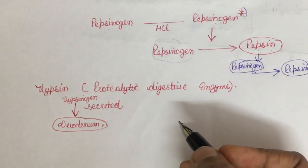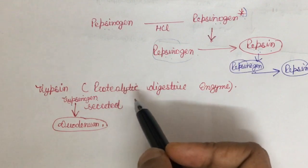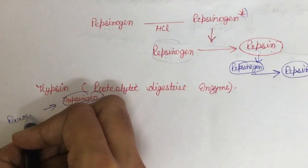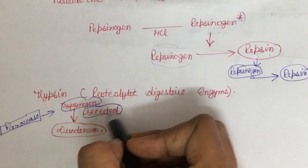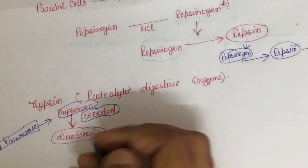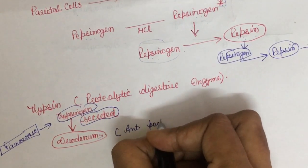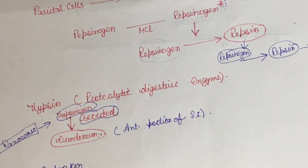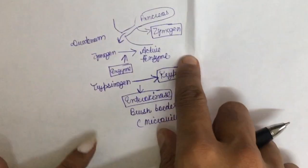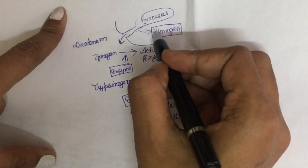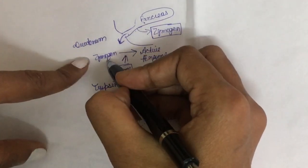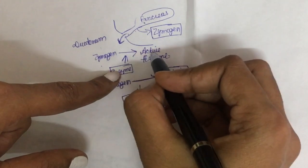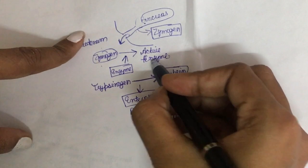Trypsin is a proteolytic digestive enzyme that digests proteins and carbohydrates. It is synthesized in the pancreas as trypsinogen, which gets secreted into the duodenum. The duodenum is the anterior portion of the small intestine. As shown in this diagram, the pancreas forms all the zymogens and the pancreatic duct releases them into the gastrointestinal tract, where they are acted upon by another enzyme and converted into their active form.